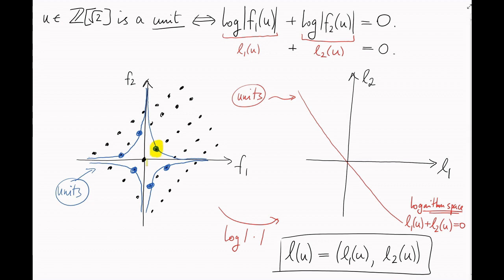For example, the element 1 is a unit. And on this left-hand diagram, it lives at the point 1 comma 1. So, on the right-hand diagram, it lives at the point L of 1, which is log 1 comma log 1, which is 0 comma 0.